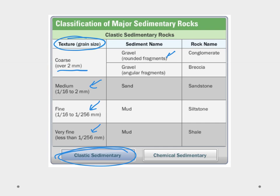If they're rounded fragments we end up with conglomerate and if they're kind of angular and sharp fragments then we call it breccia. So large texture, we're going to end up with conglomerate or breccia depending upon the shape of the fragments of the gravel. For this medium here we call the sediment sand and that's how we make sandstone.